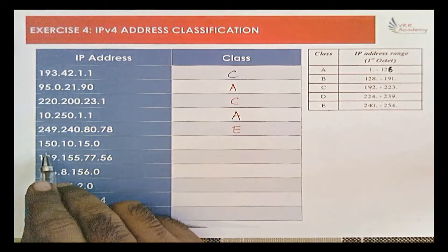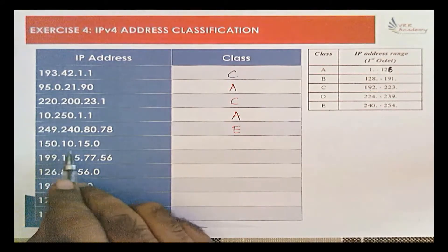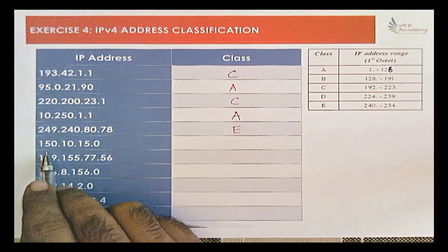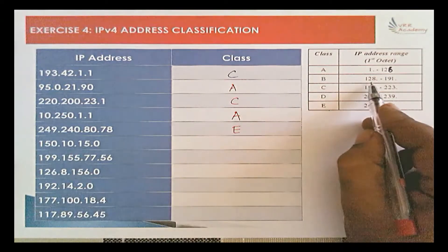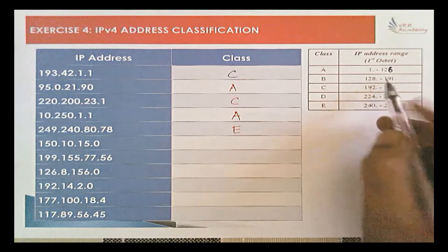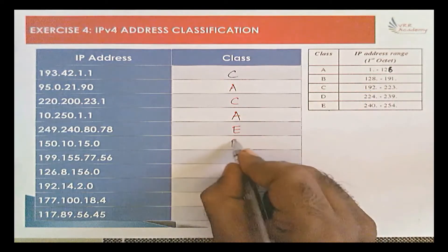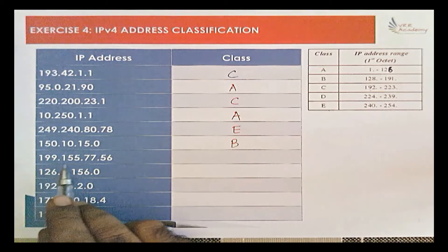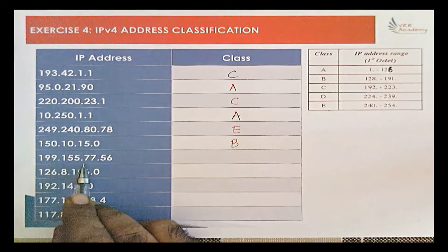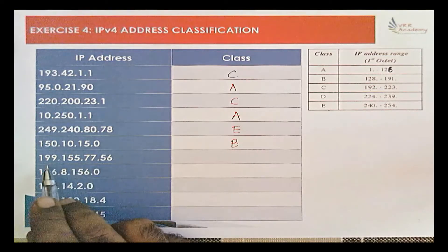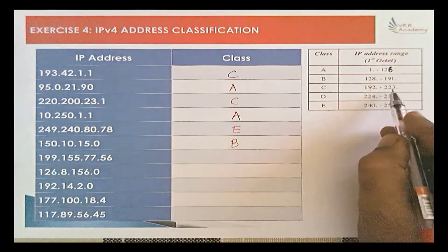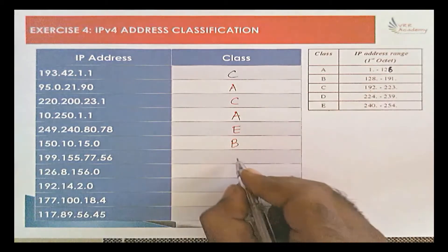The next address is 150.10.15.0. The first octet is 150, which is in the range of 128 to 191, so this is a Class B IP address. Then 199.155.77.56 — the first octet 199 is in the range of 192 to 223, so it is a Class C IP address.